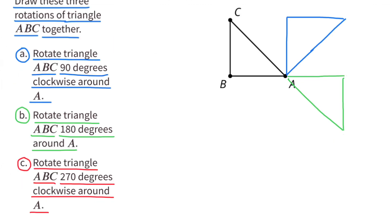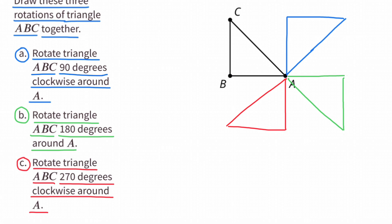Part C: Rotate triangle ABC 270 degrees clockwise around A. In red you'll see the triangle's 270 degrees clockwise rotation around point A as the center.